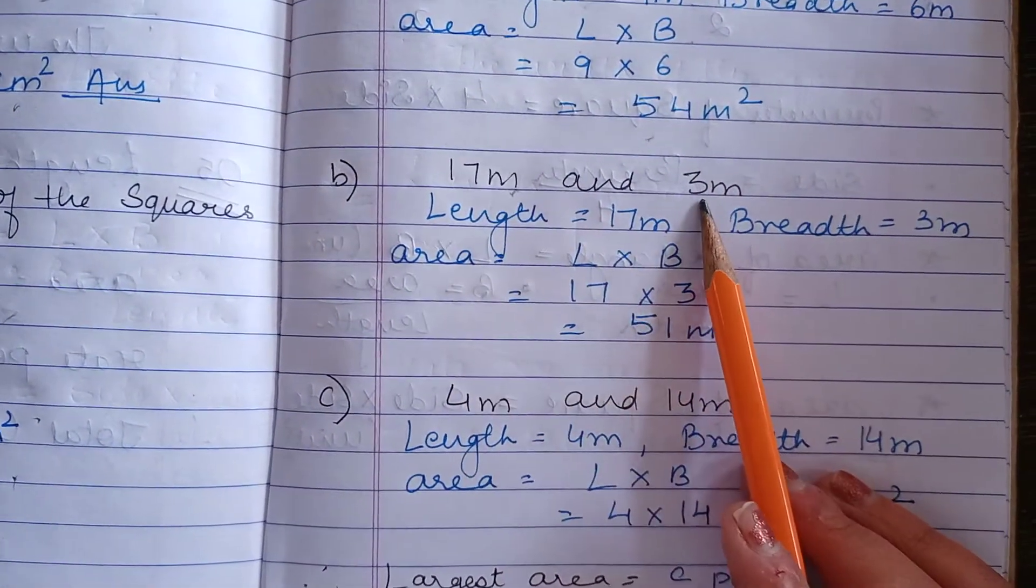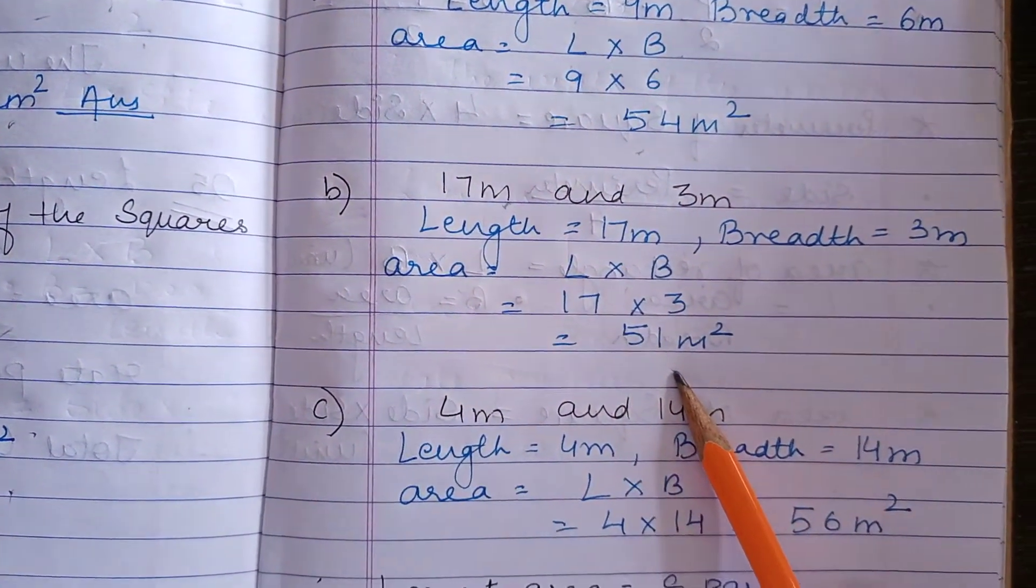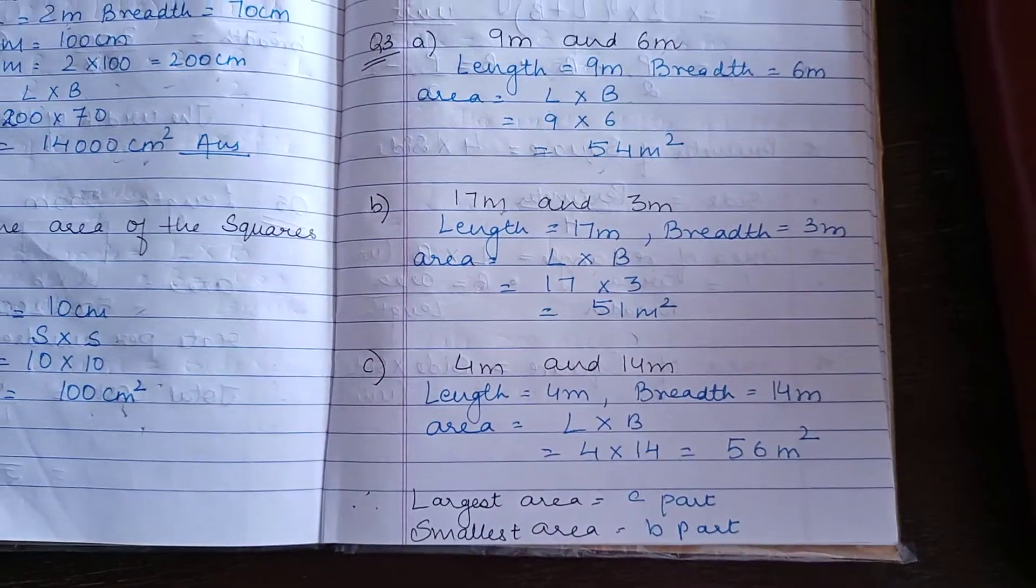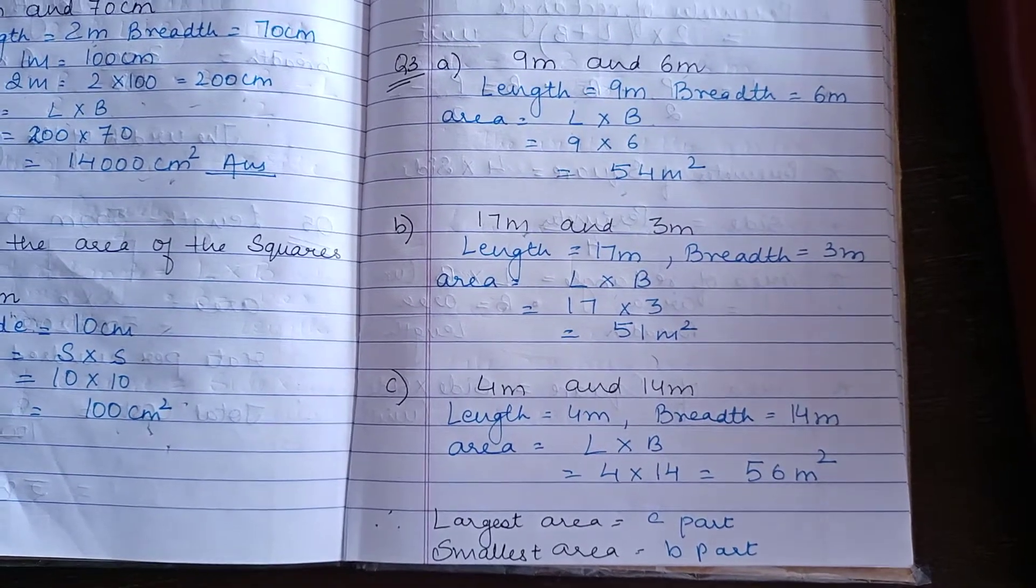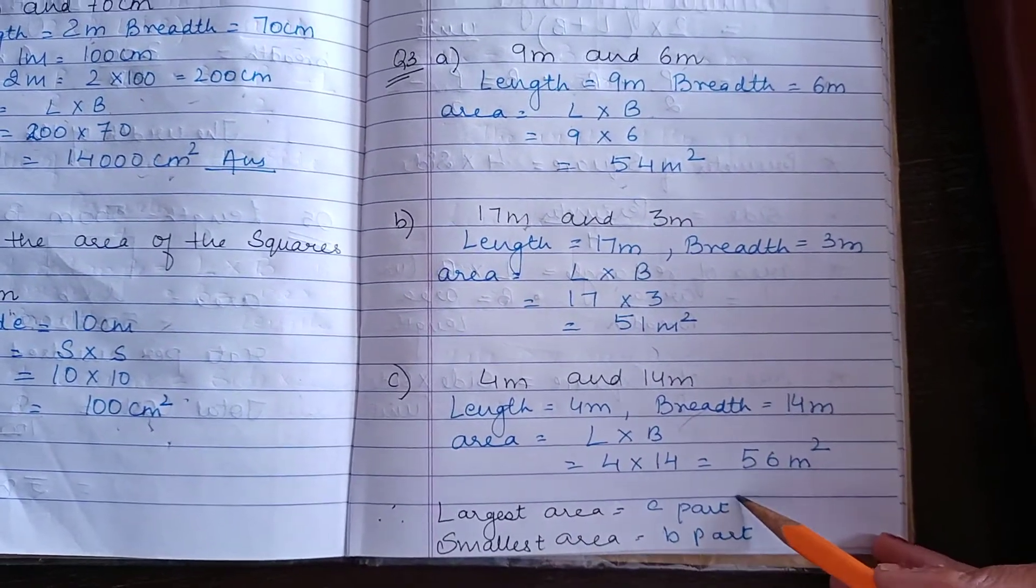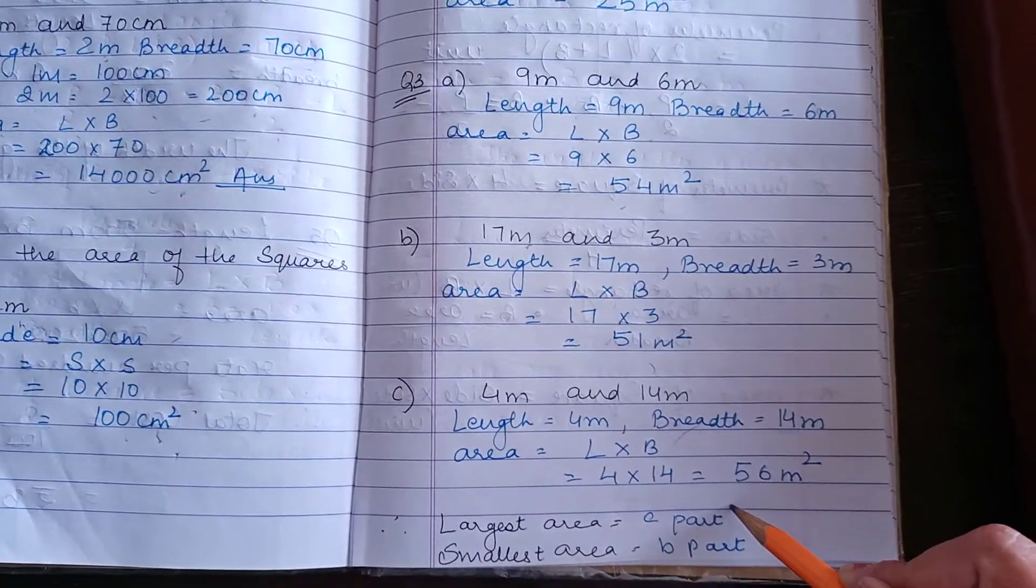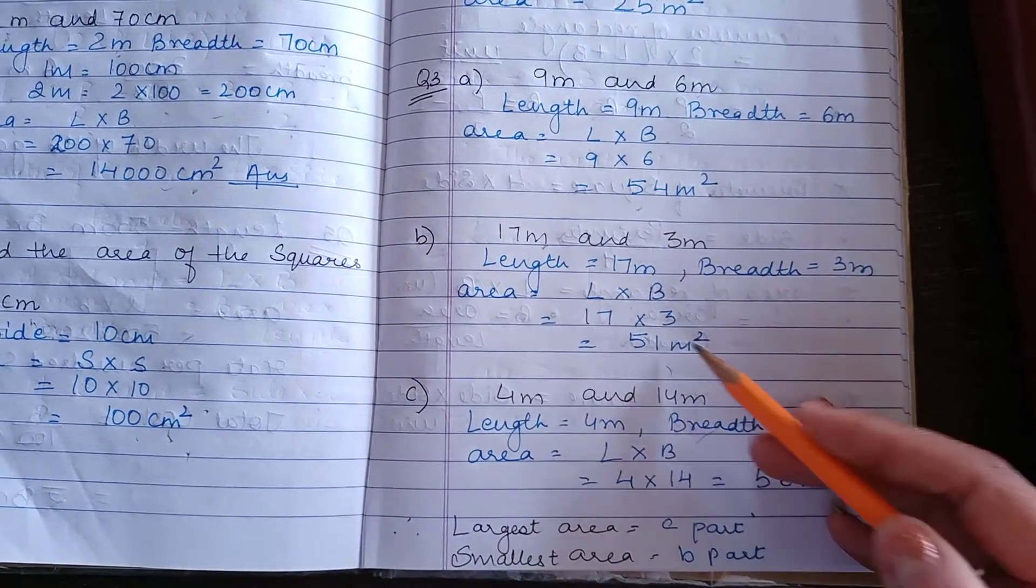17 meter multiply by 3 meter area. Length into breadth. Find the answer. Same for part C also. We have to find the area in all 3 parts. And the formula is same: length multiplied by breadth. Now the question is asking which part has the largest area and which part has the smallest area. We have to compare all 3 areas.